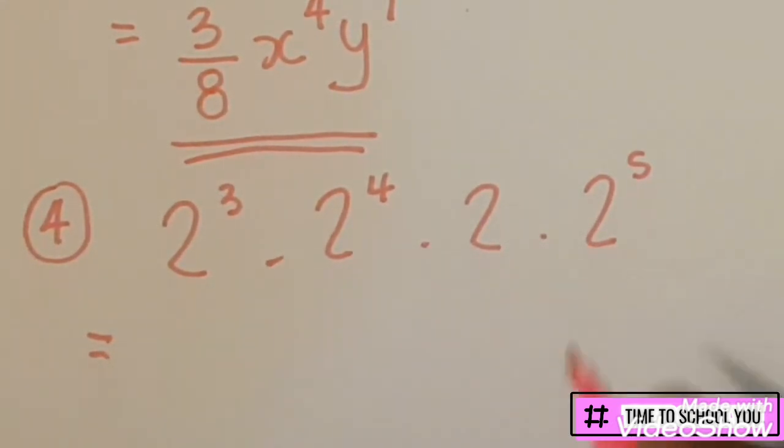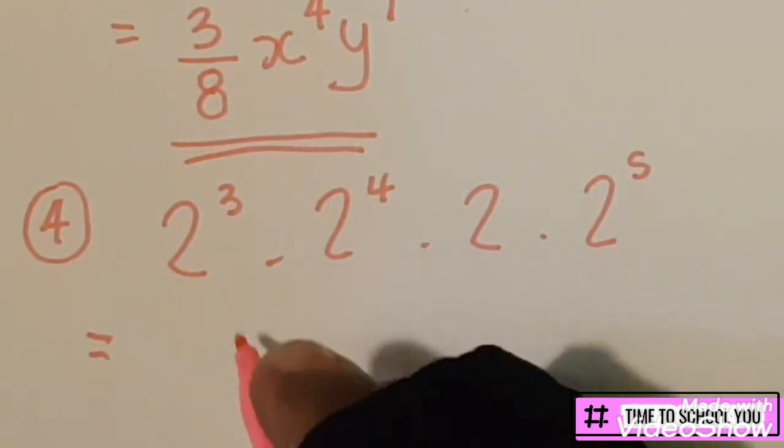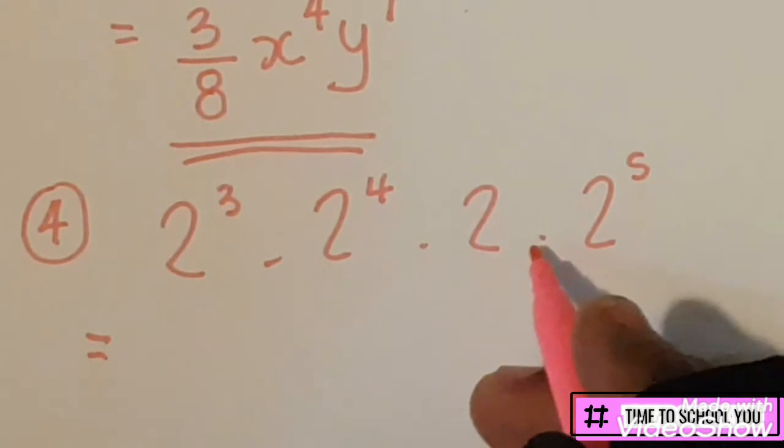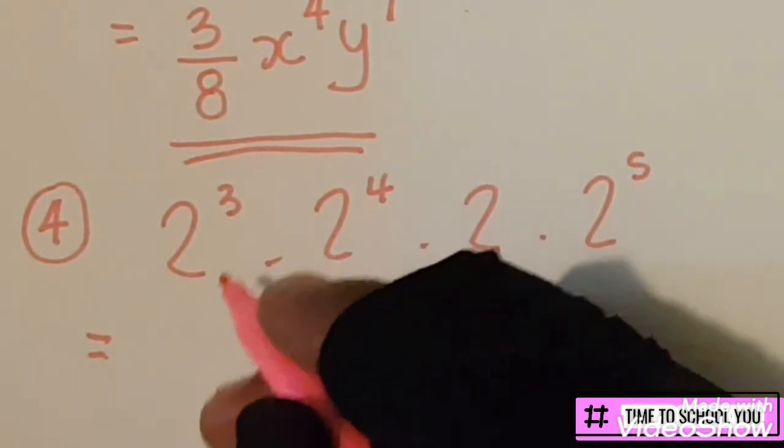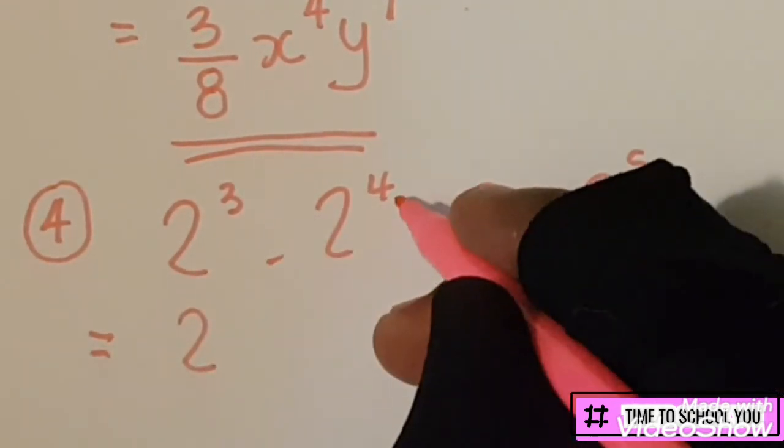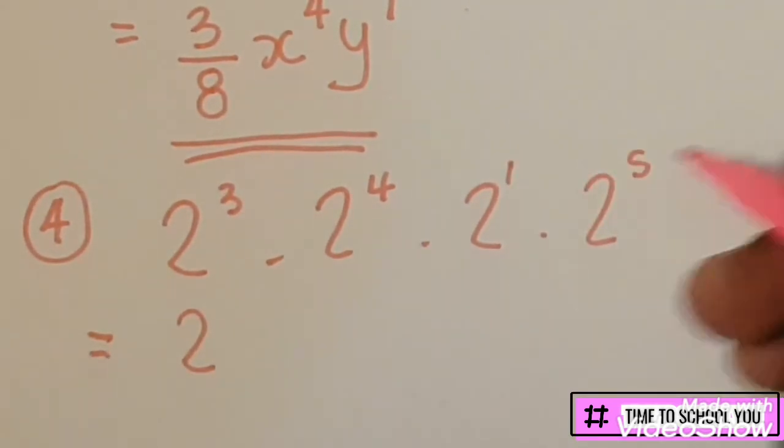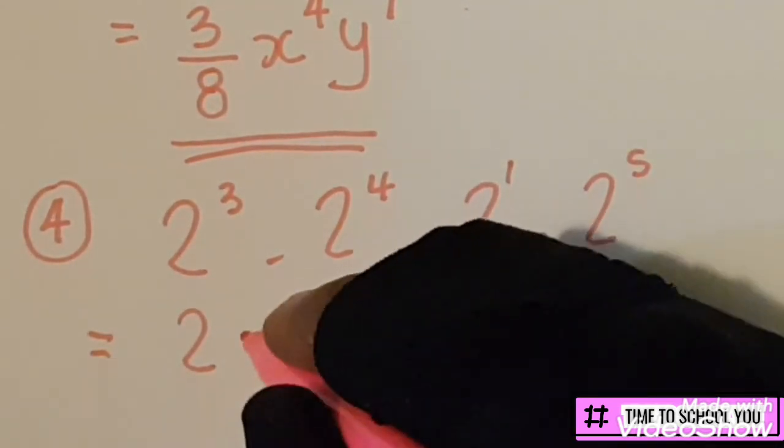And when we multiply the bases which are the same, we add the powers. So our answer will be 2^(3+4) is 7, plus the 1 is 8—remember the imaginary 1—and plus the 5 is 13.